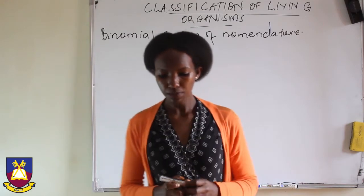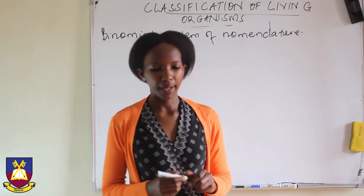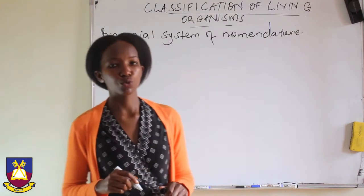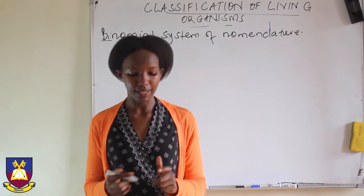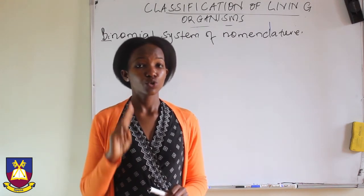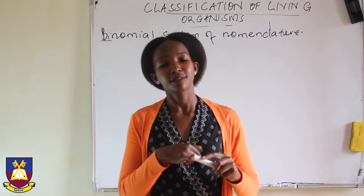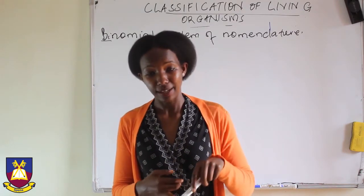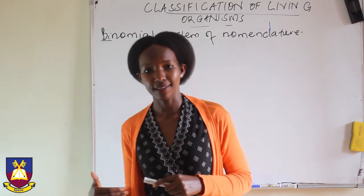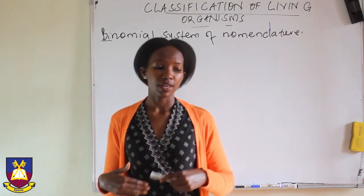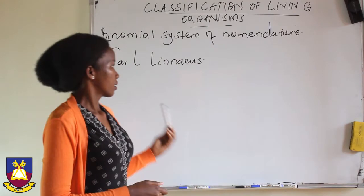Binomial nomenclature. Bi has to do with two, and nomenclature with naming. So binomial nomenclature refers to the system of giving organisms two names. These two names are always derived from that organism's genus name and its species name, and they always come from either Greek or Latin.